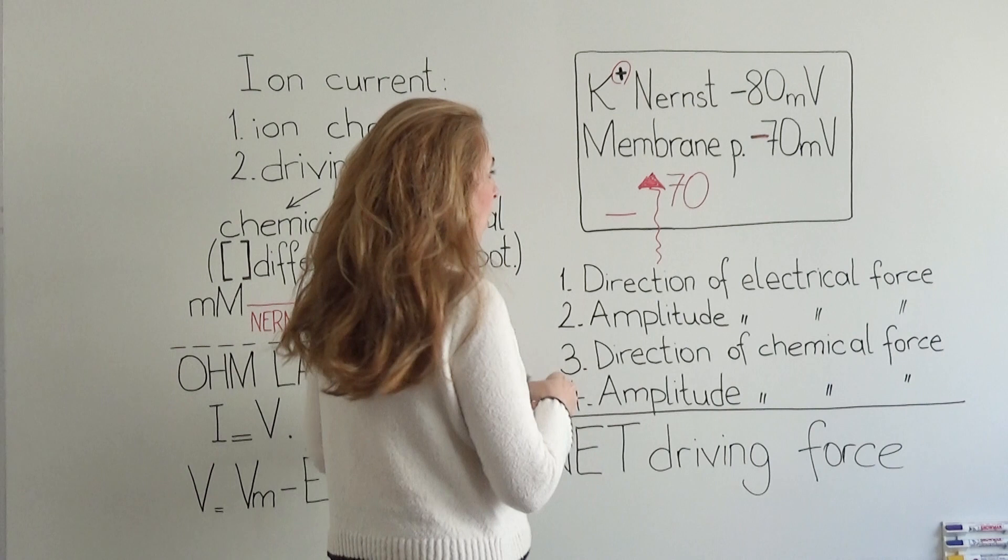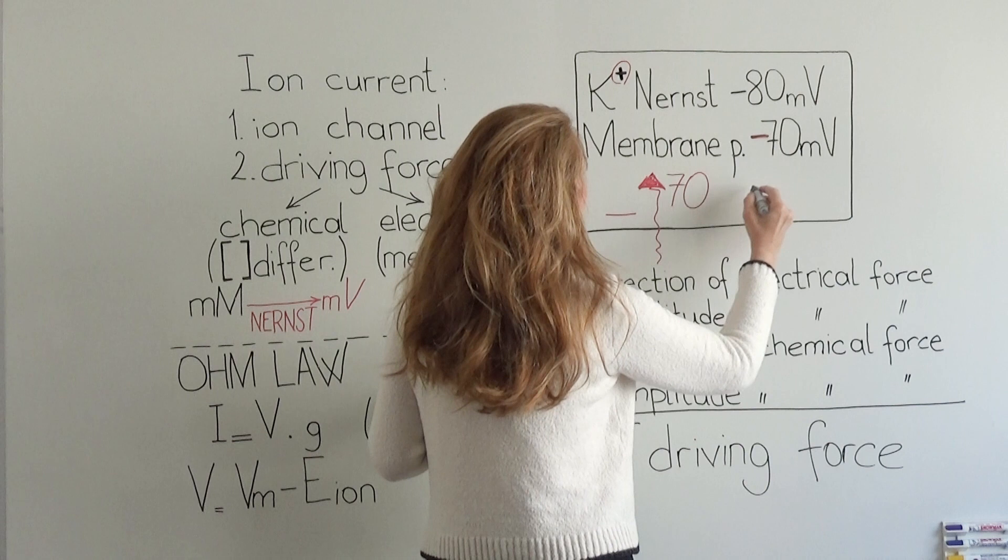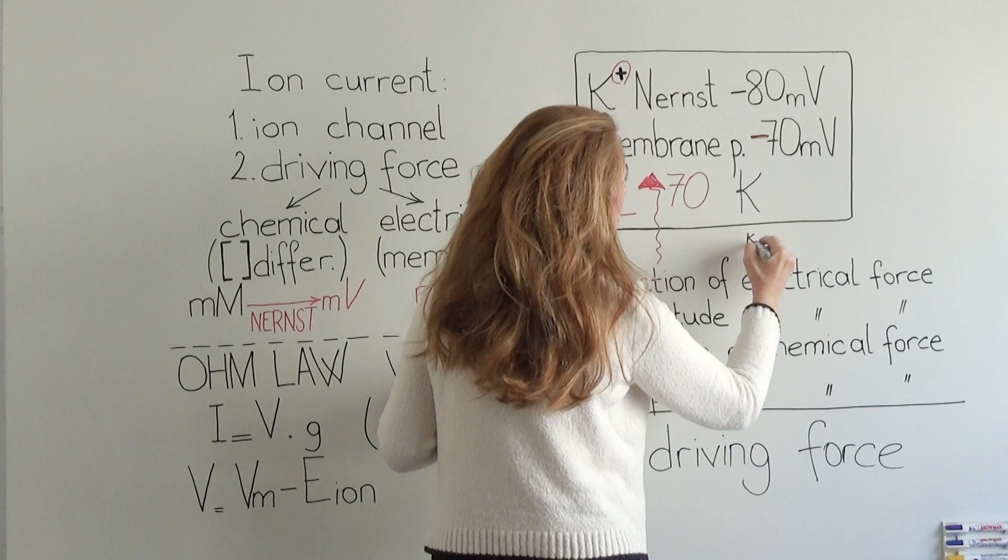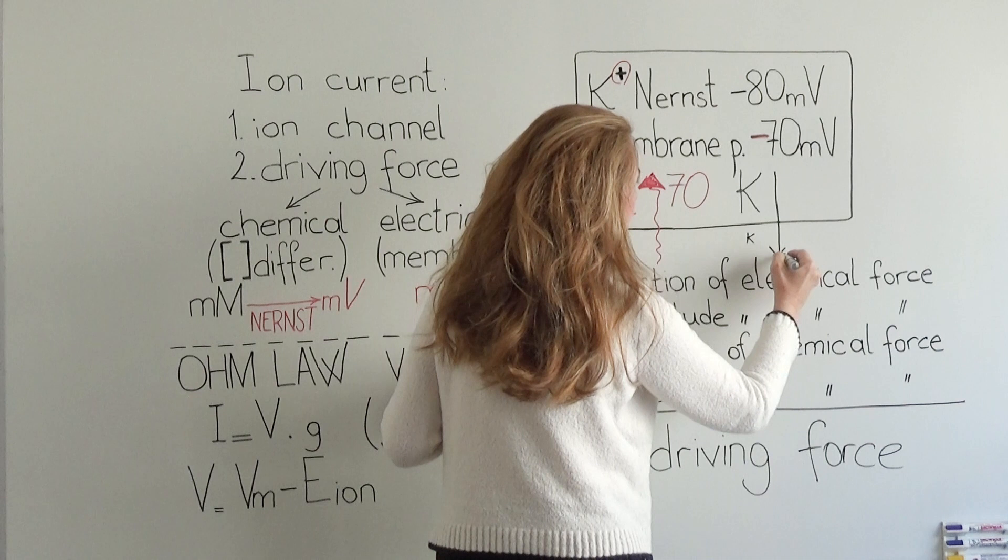Step number three is: what is the direction of chemical force? We know that the concentration of potassium is high inside the cell and it is low outside the cell, so the chemical force is going to push potassium out of the cell.